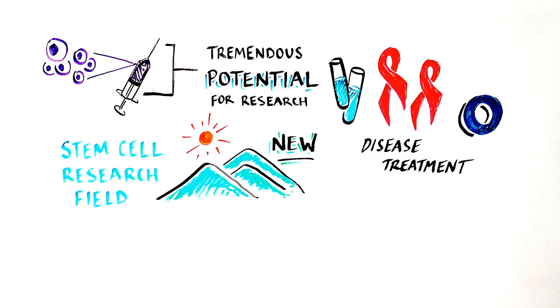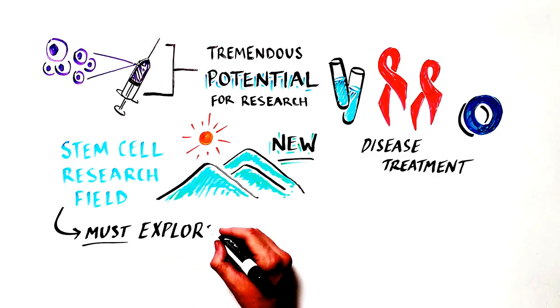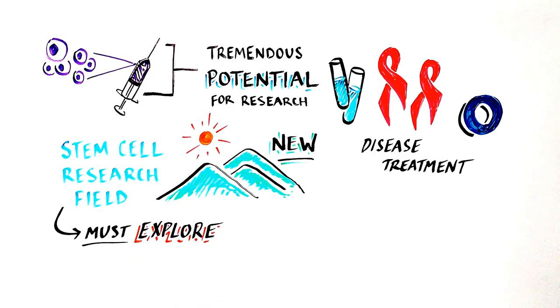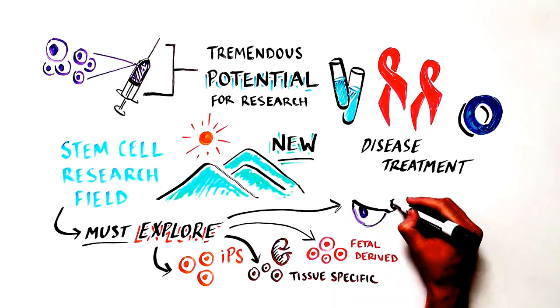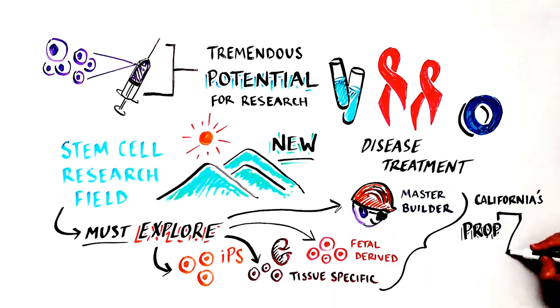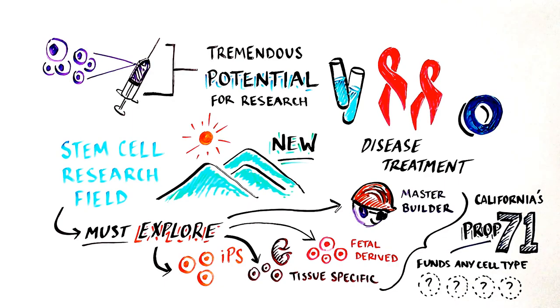Because the field of stem cell research is so new, it is critical to explore all avenues of stem cell research, from iPS cells, pluripotent, to tissue-specific stem cells, including fetal-derived stem cells. For this reason, California's Proposition 71 was written to be agnostic as to the stem cell type funded. Data-driven research must determine which cell type is the best, safe and effective therapy.